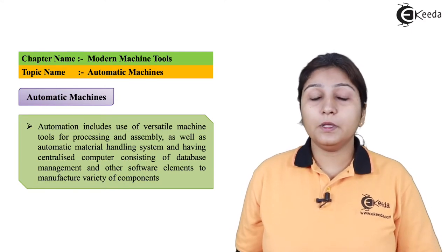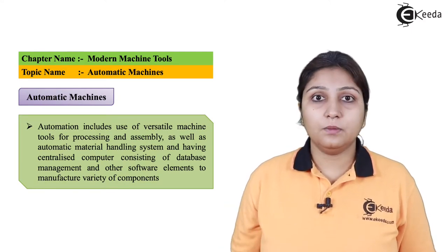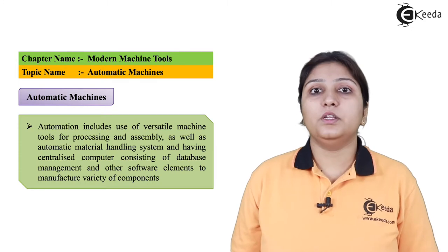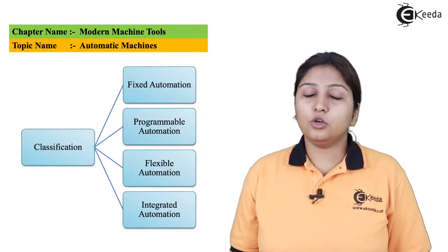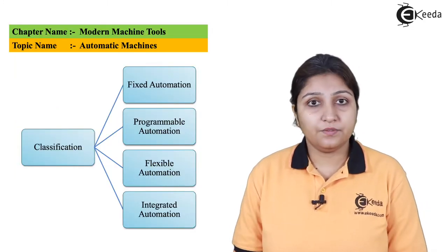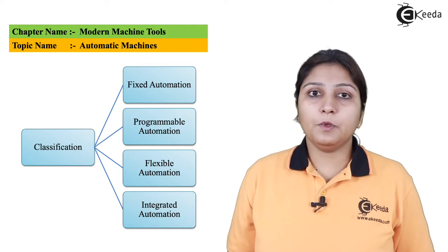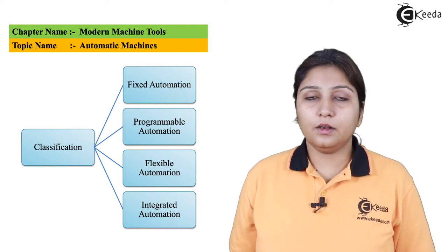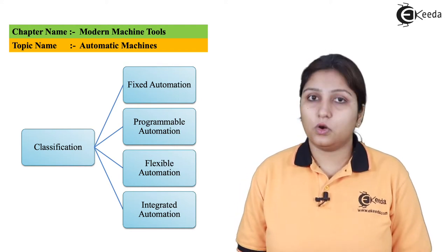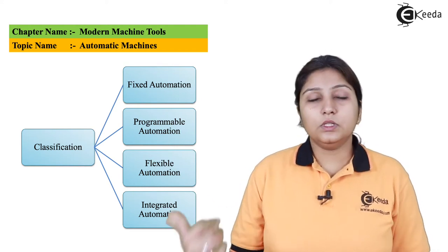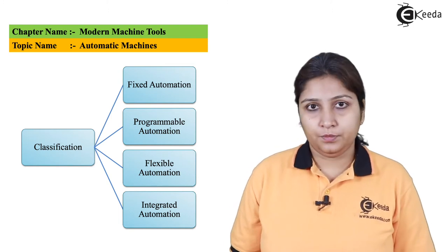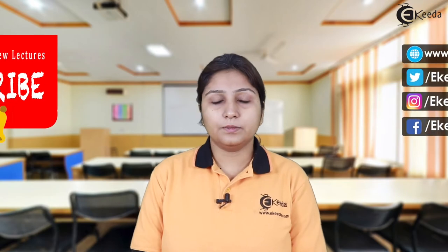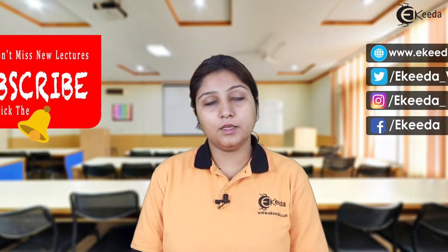The use of skilled labor is again only for programming structure; for actual operations, skilled labor is not required. Automation can be classified as fixed, programmable, integral, as well as flexible automation. These are the certain types of automation. Stay tuned with Ikeda and do subscribe to our channel.